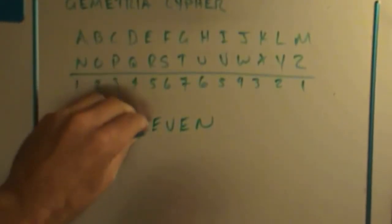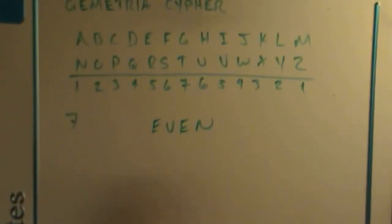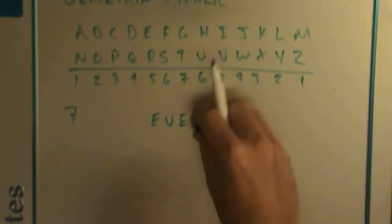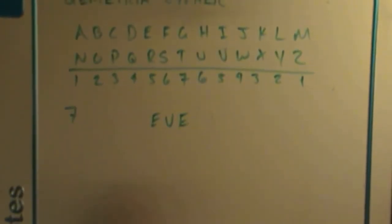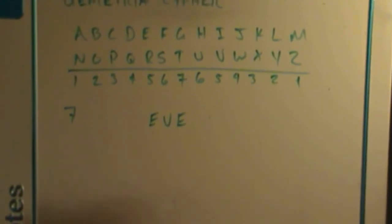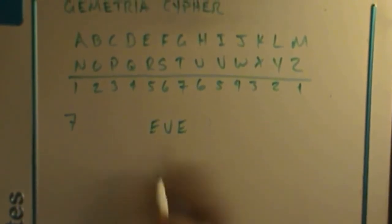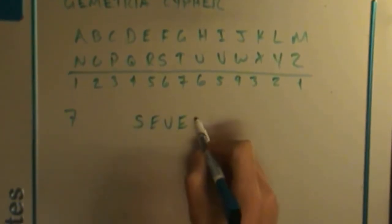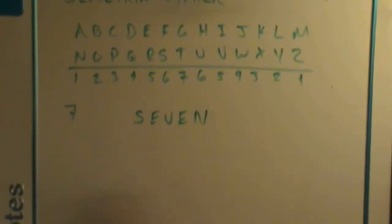And just a little side note, if you were to take away this S, you have even, which is where we get the word Eve from Adam and Eve. We get eleven, even, evening. We get a lot of words that refer to the feminine energy of Adam and Eve in our English alphabet.